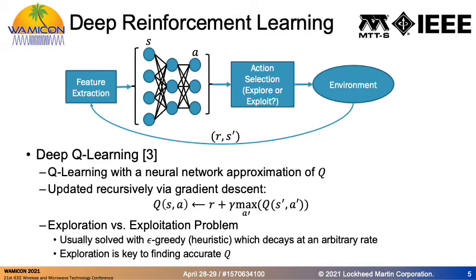Before going into detail on those contributions, I'd like to provide some background on deep reinforcement learning. Deep reinforcement learning is a class of reinforcement learning algorithms that involves the use of a deep neural network. Probably the most popular algorithm in this class is deep Q-learning — Q-learning with a neural network approximation of the Q function. In the diagram above, the Q function is the neural network shown in the second element of the flow chart, and this function takes in a state s and returns an expected reward over each action a.